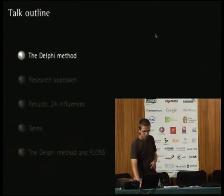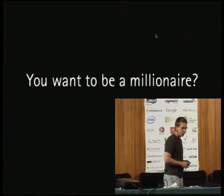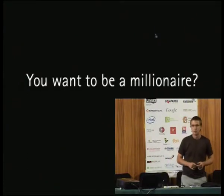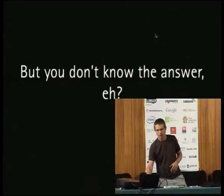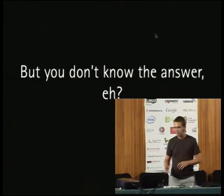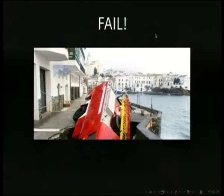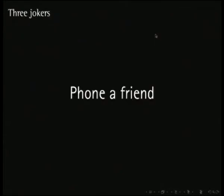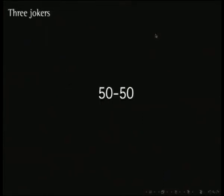So let me start with the Delphi method, and it goes back to a very simple question: you want to be a millionaire. You all know the game show, and you probably all wondered at some point what happens if you're up there and you don't know the answer. You have three jokers: you can phone a friend, you can ask the audience, or you can have two of the four choices eliminated — the 50-50 chance.